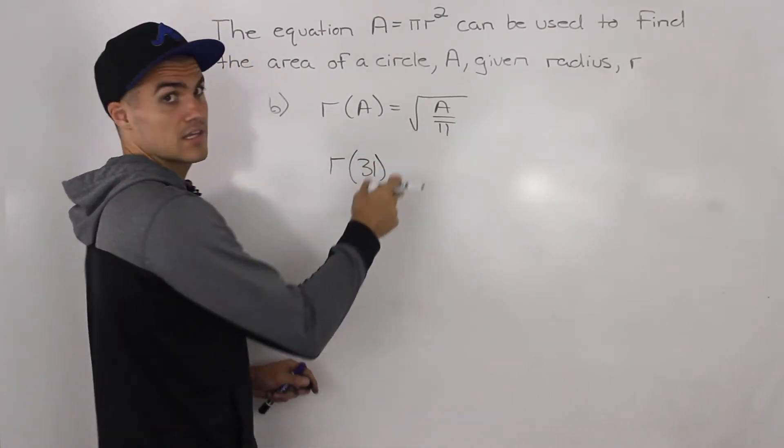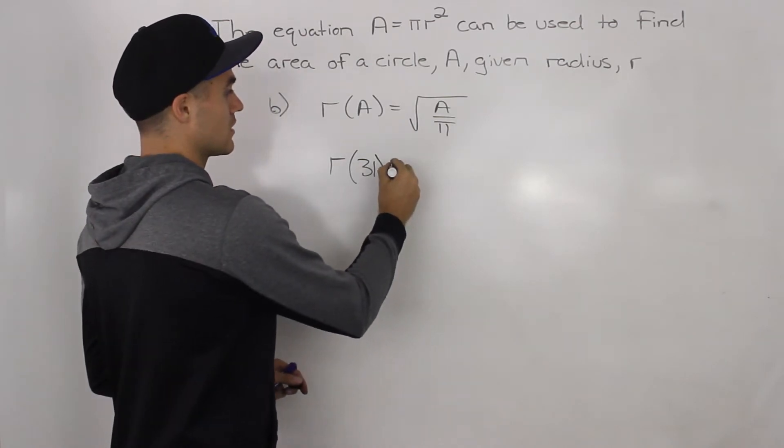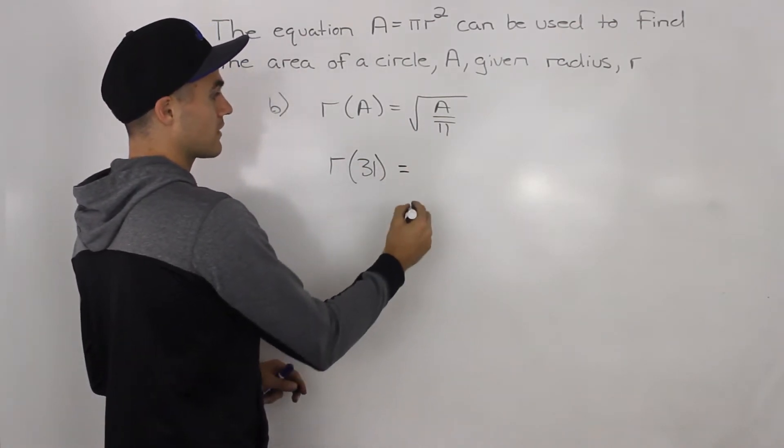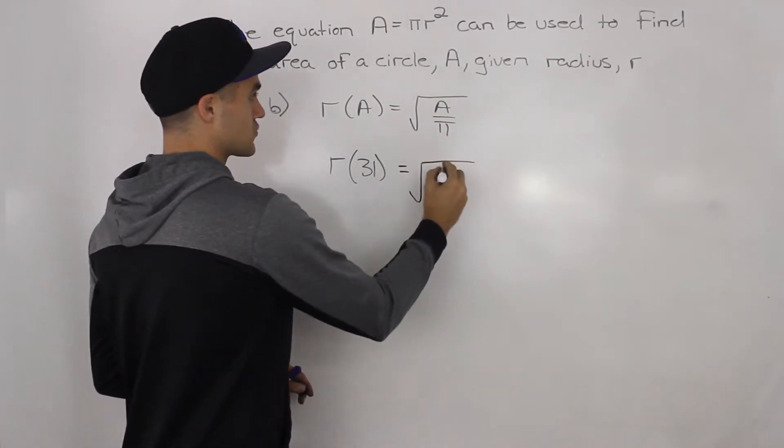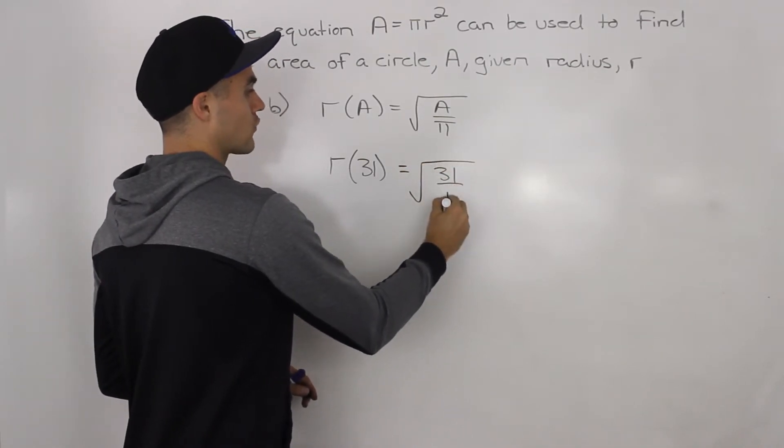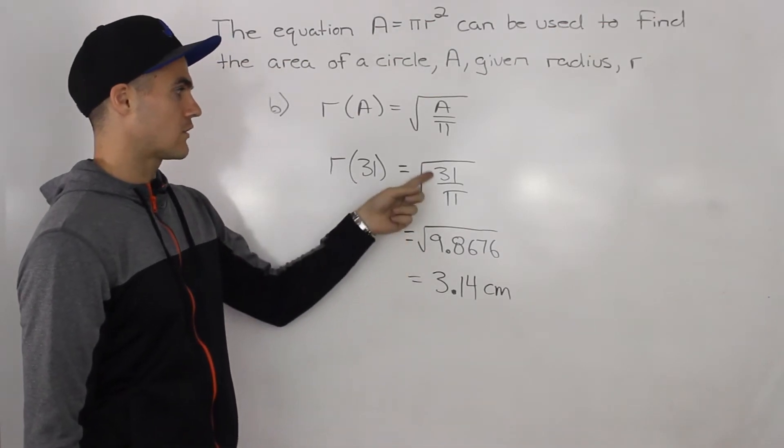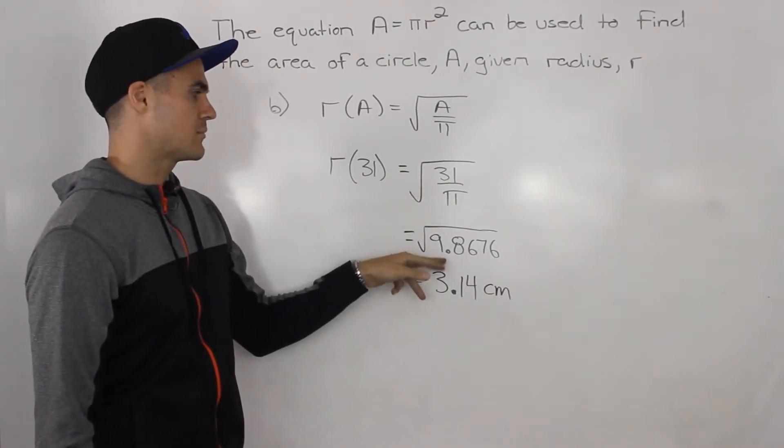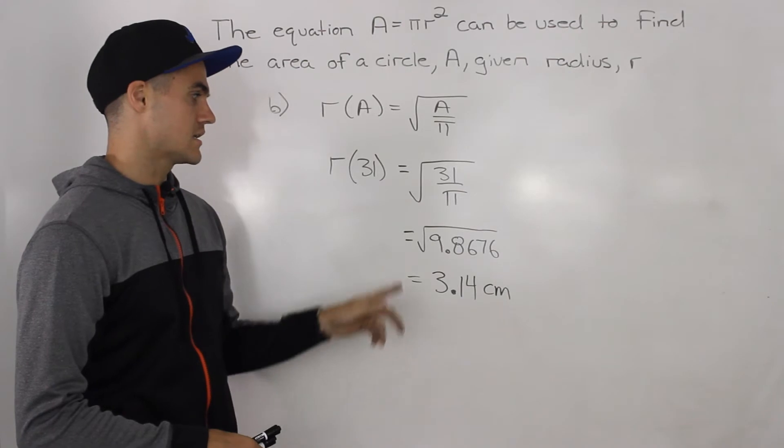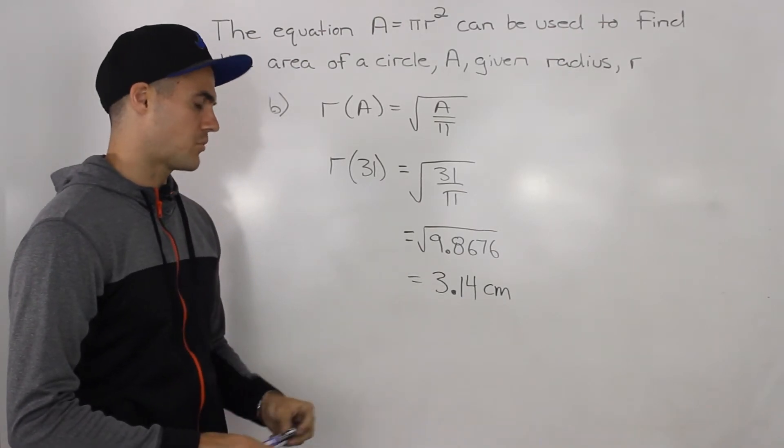So we can use the inverse equation that we found in part a. So it would just be the square root of 31 over π. And when you end up inputting all of that in your calculator, 31 divided by π gives you 9.8676, square root of that would be 3.14.